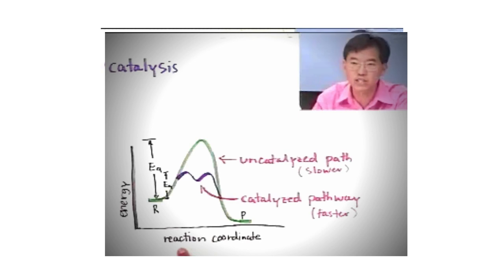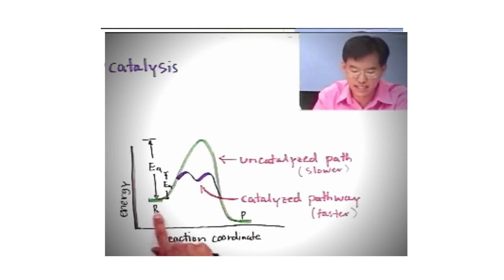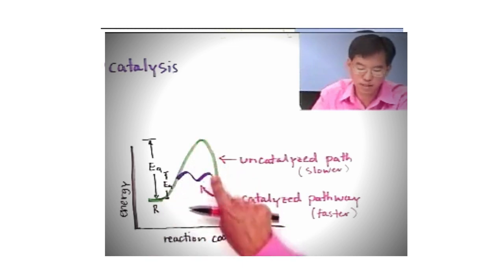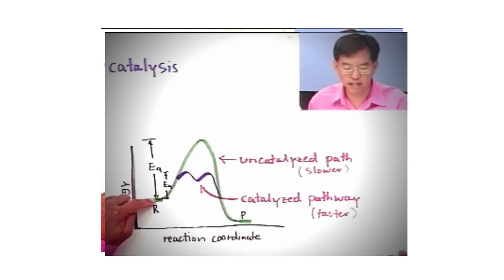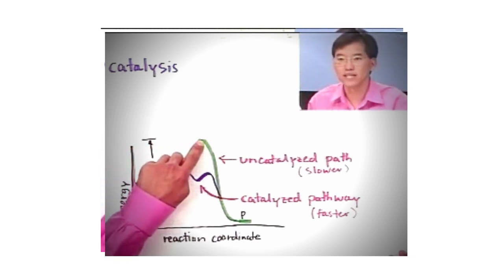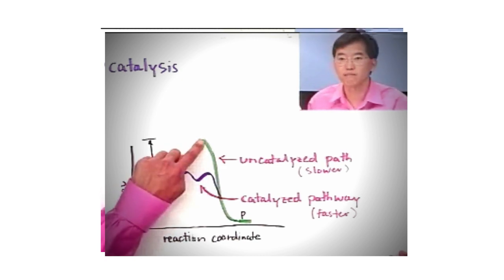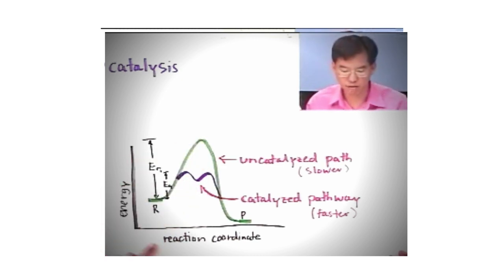So let's now look at a generalized picture of what a catalyst does. Here's a reaction coordinate diagram. We have reactants and we have products, and reactants go to products but they have a large activation energy. Remember, activation energy is the amount of energy you have to put in to the reaction to get to the transition state or activated complex, the thing that is at the peak of this reaction coordinate diagram, so that's the highest energy.